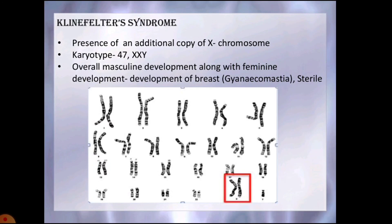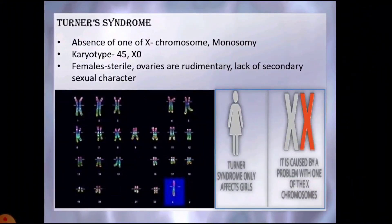Turner's syndrome is caused by the absence of one X chromosome, so the individual has only 45 chromosomes with an X0 sex chromosome constitution. The individual is female but sterile, with underdeveloped ovaries, underdeveloped breasts, short stature, and a characteristic webbed neck. They are often sterile as they may not menstruate or ovulate. Secondary sexual characters are absent and they are subnormal in intelligence.